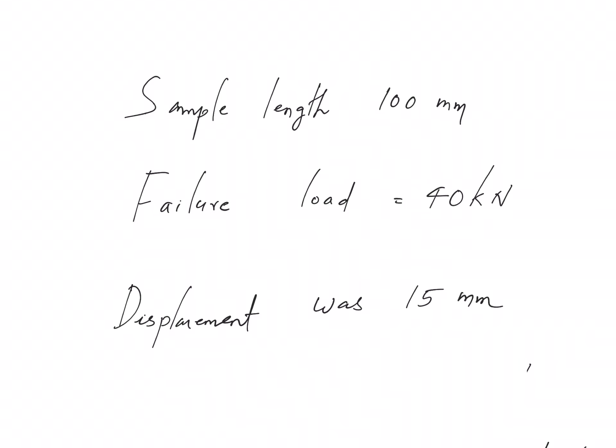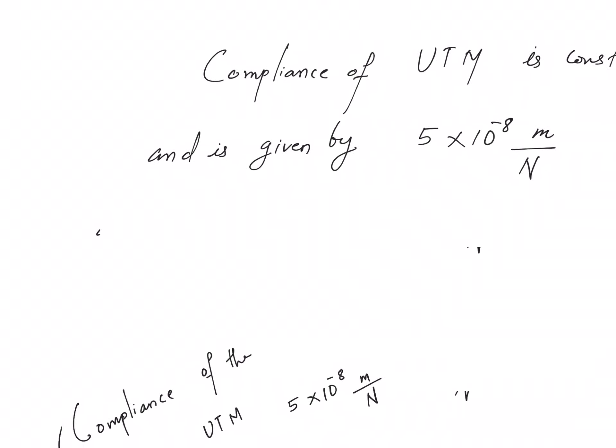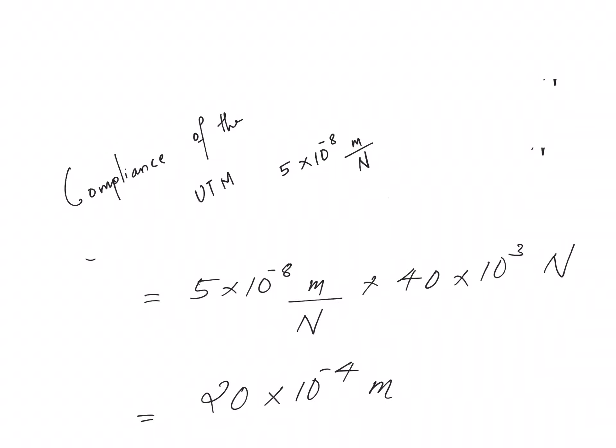If that is clear then we can go ahead and solve the problem. So here I have just put together all the values that were given in the problem. We know the sample length, we know the failure load, then we know the amount of displacement measured by the cross head, and we also know the compliance of the system. It is given as 5 times 10 to the power minus 8 meter per Newton.